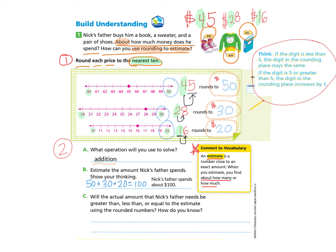Now let's look at part C. Will the actual amount that Nick's father needs be greater than, less than, or equal to the estimate using the rounded numbers? And how do you know? So what they're really asking here is, will the actual sum, the actual amount, will it be more than, greater than, will it be less than,